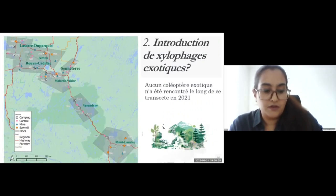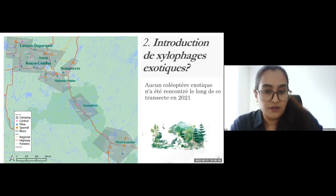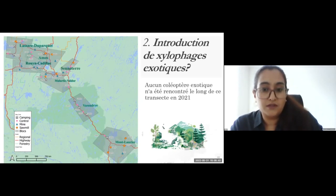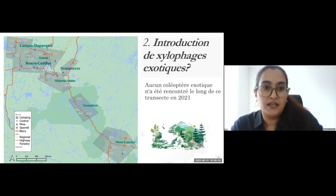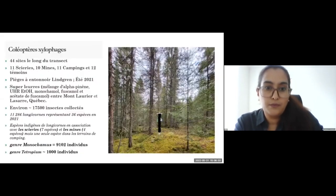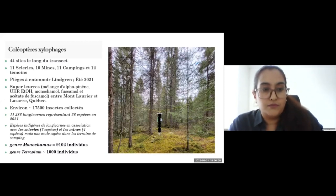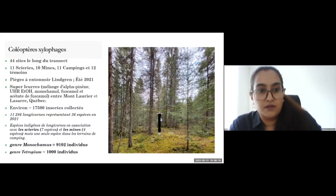The second part of the project focused on the detection of any introduction of exotic wood borers. We chose 44 sites in seven blocks from Montreal to La Sarre-du-Parquet, divided into Mont-Laurier, Véranderie, Malartic-Valteau, Senneterre, Pente-Cadillac, La Sarre-du-Parquet, and Amos. Among the 44 sites, we installed Lindgren funnel traps. We chose around 11 sawmill sites, 10 mine sites, 11 camping sites, and 12 control sites.